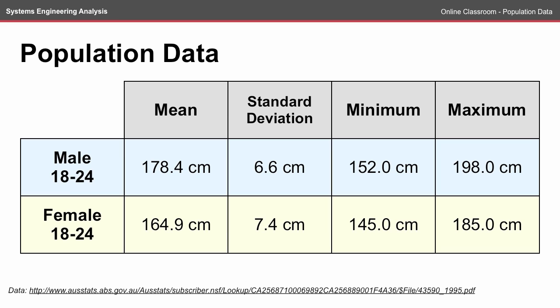Here is some population data from an Australian Bureau of Statistics survey looking at the average height of male and female participants aged between 18 and 24. We find that men are generally taller than women. In the sample population, the standard deviation for men was slightly smaller than for females. The shortest man in the study was 1.52 meters and the tallest was 1.98. The shortest female was 1.45 and the tallest was 1.85.